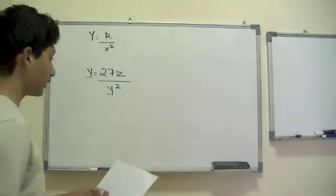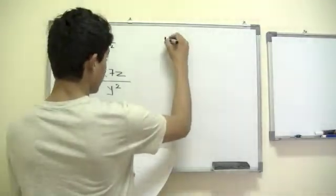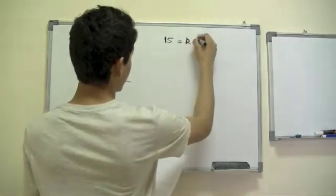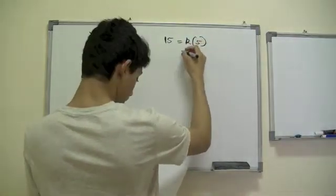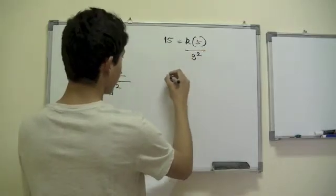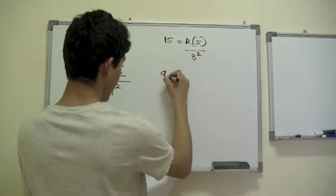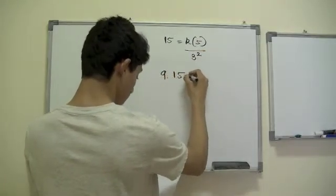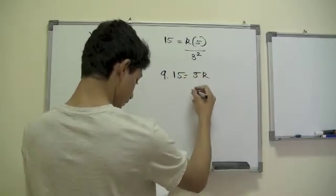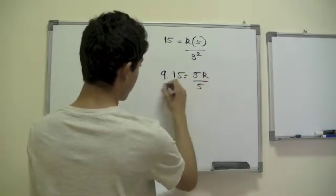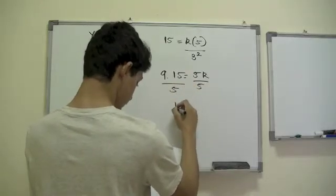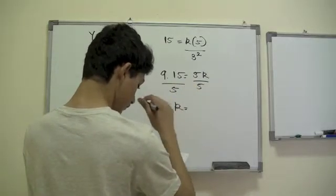Then you have 15 equals k times 5 divided by 3 squared. That gives 9 times 15 equals 5k. Dividing both sides by 5, you find the value of k.